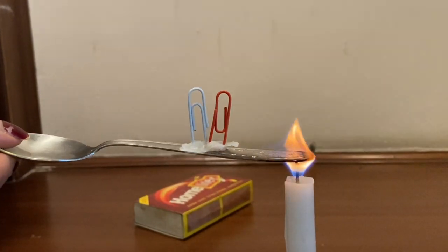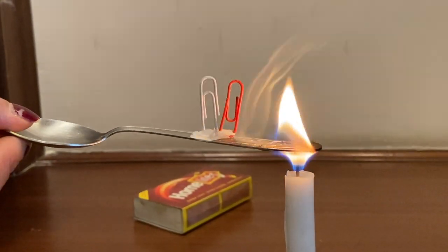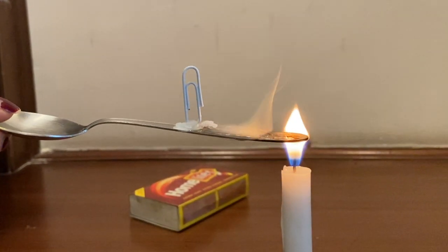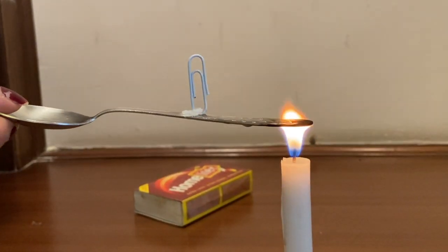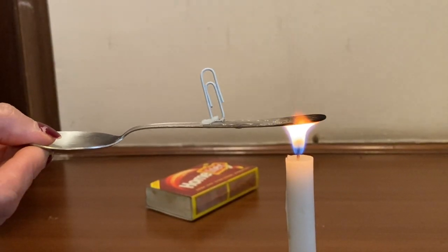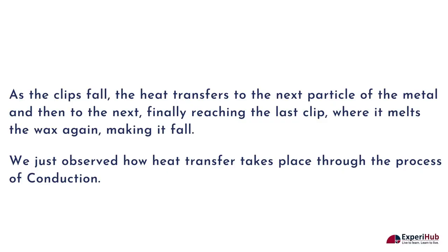This is happening because as the heat of the flame travels along, it heats up the atoms or particles of the metal the spoon is made of. This melts the wax, causing the clips to fall down. As each clip falls, the heat transfers to the next particle of the metal and then to the next, finally reaching the last clip where it again melts the wax making it fall down. We just observed how heat transfer takes place through the process of conduction.